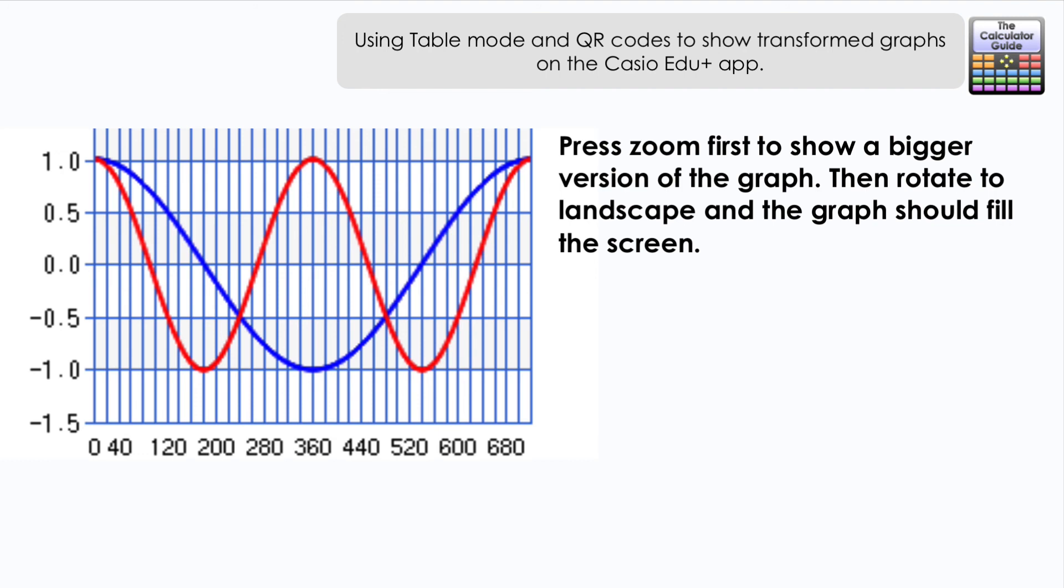So there we go, how we can use graphs generated in table mode with the QR codes on the ClassWiz and in combination with the Casio Edu+ app can create graphs from our original function and our transformed function.